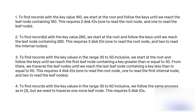Query 4: To find records with key values in the range 30 to 60 inclusive, we follow the same process as in Query 3, but we need to traverse one more leaf node. This requires 5 disk I/Os.